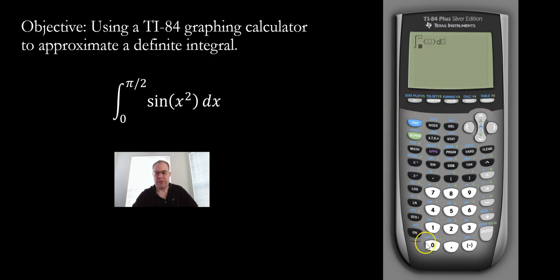So what you can do is you just go ahead and put in the bounds. You can put our bounds, put in the actual function, and then put in the variable that we're integrating with respect to. So we're going to put in zero for, that's our lower bound. Our upper bound, again, is pi over two.